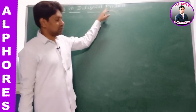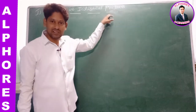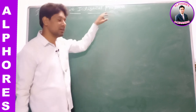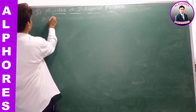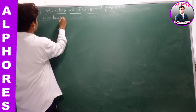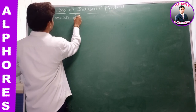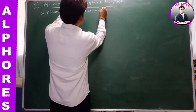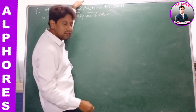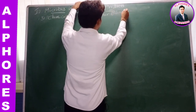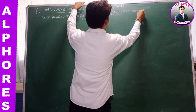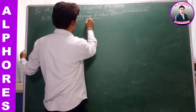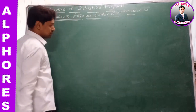We are discussing microbes in industrial products. We completed fermented beverages and antibiotics. Now we are going for number three: chemicals. We will discuss chemicals, enzymes, and other bioactive molecules. First, we will go for chemicals.